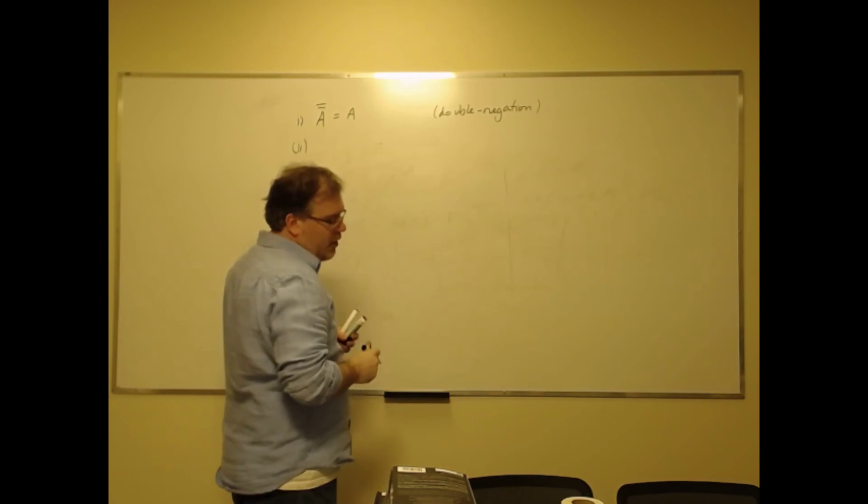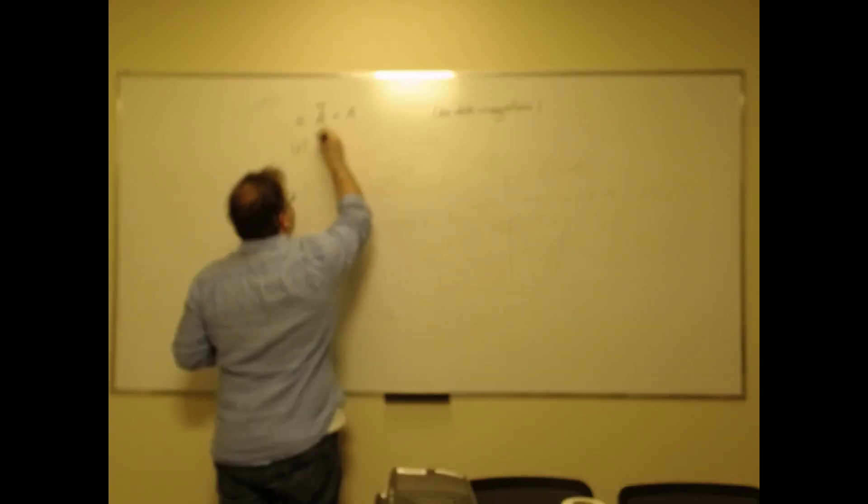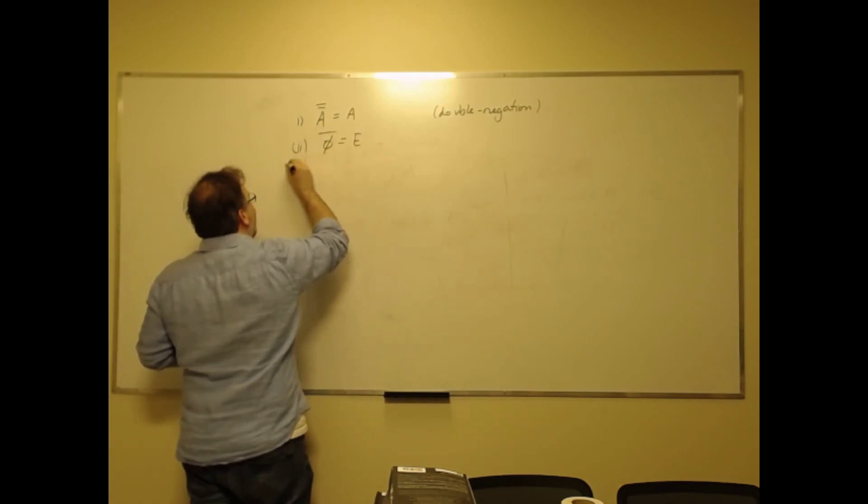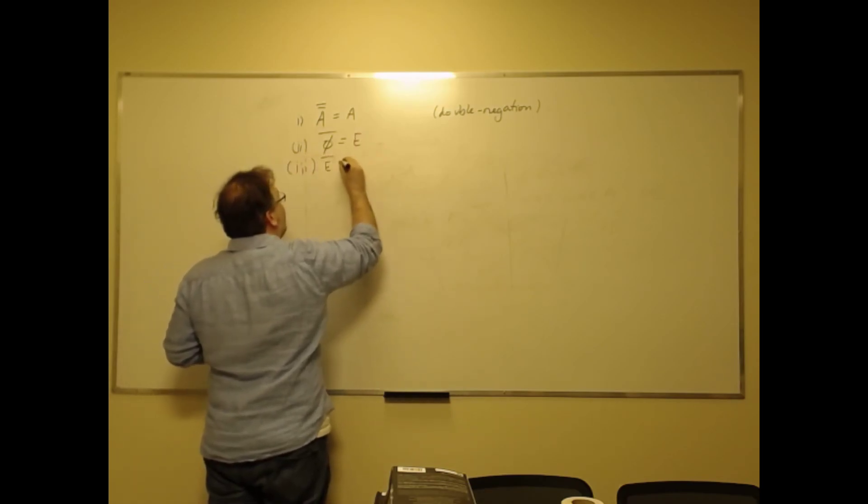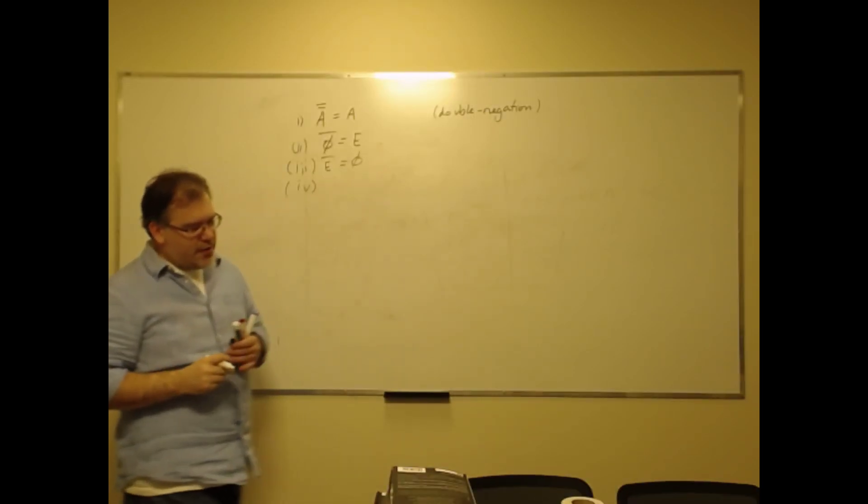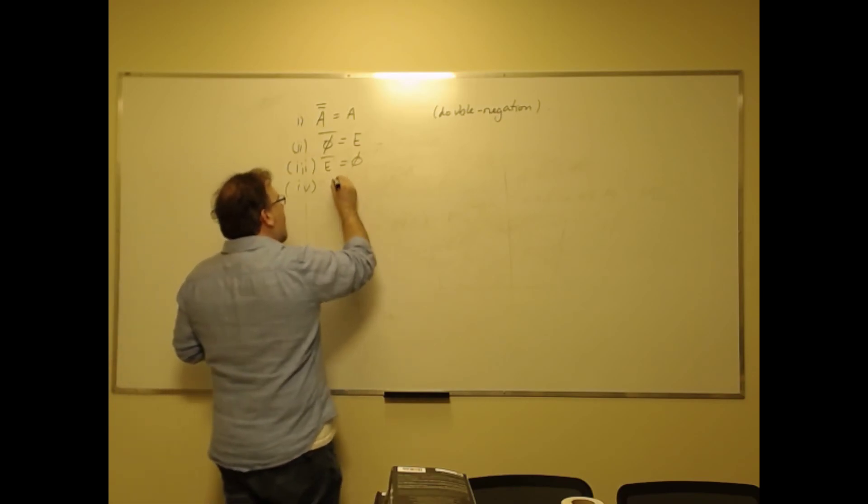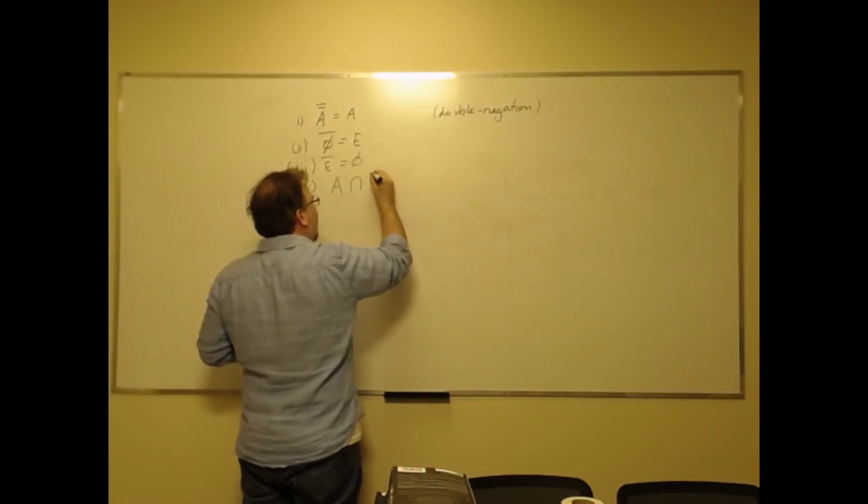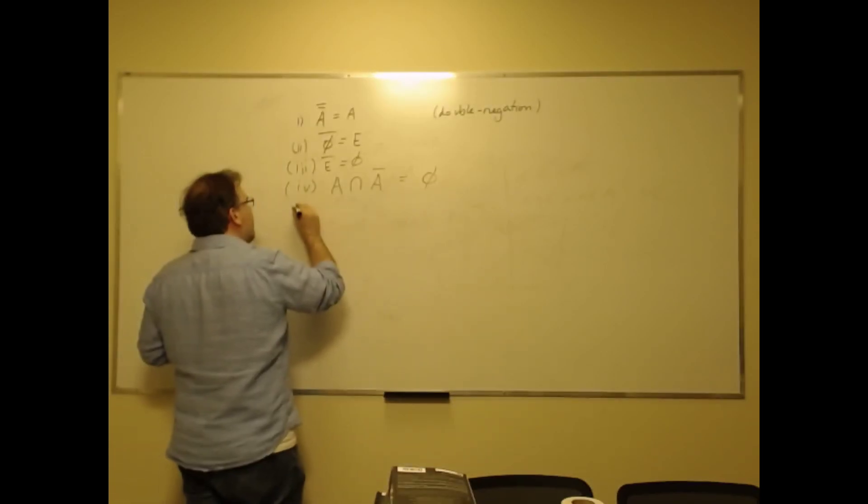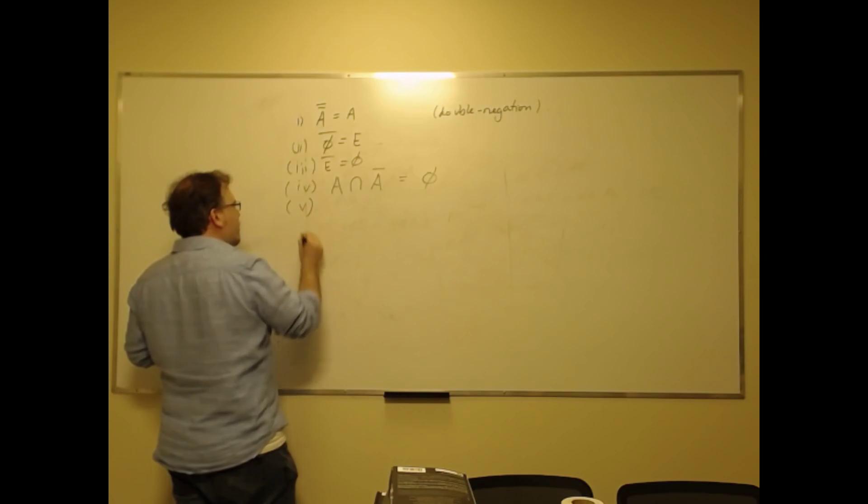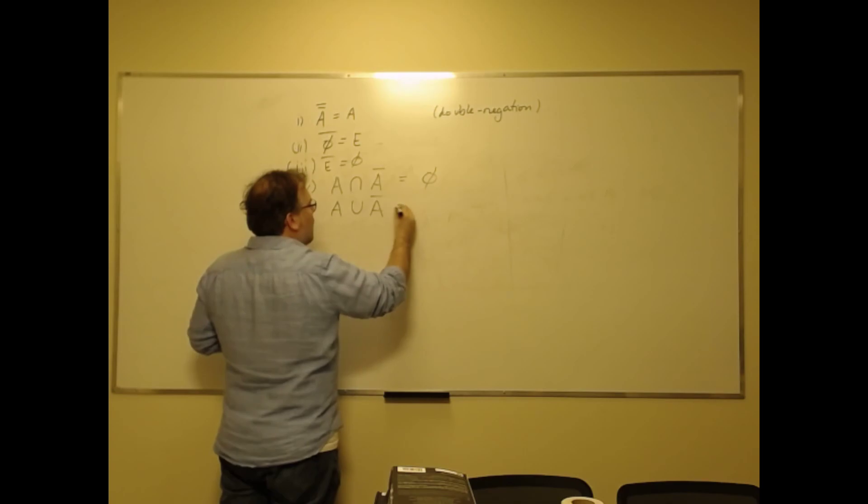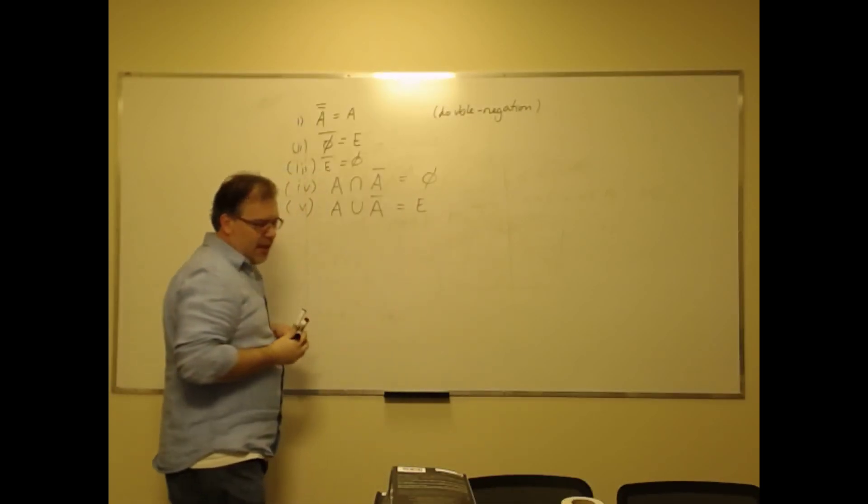So the second one says that the complement of the empty set is E. The third one says that the complement of E is the empty set—all fairly intuitive, I hope. Now what do you think is the intersection of A and the complement of A? That's the empty set. There is nothing there—nothing to see here, move on. The union of A and its complement is well, the entire environment.